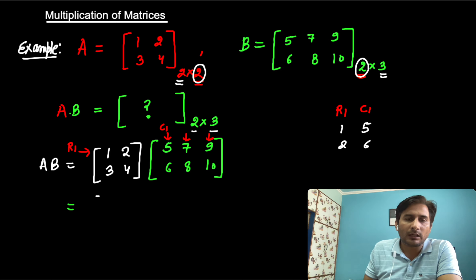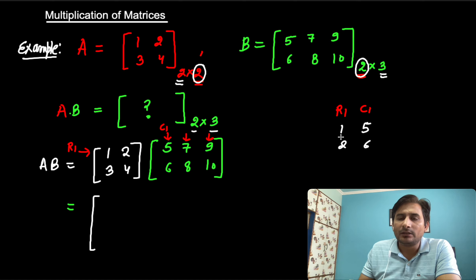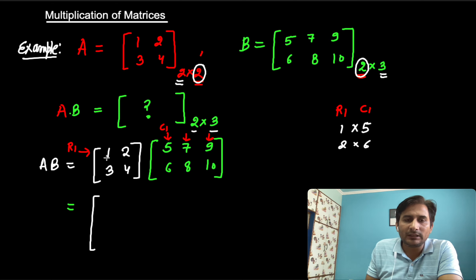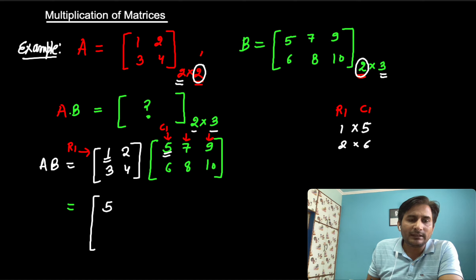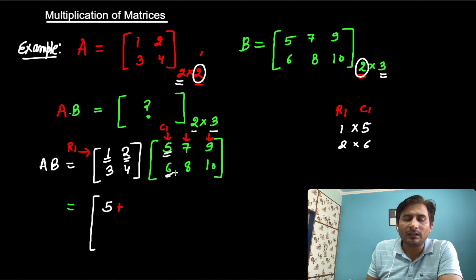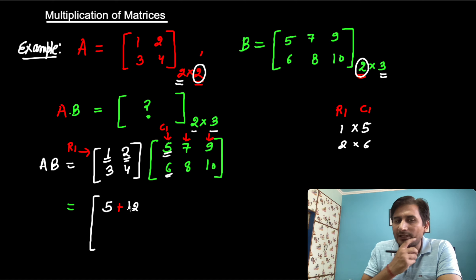So what we need to do now: row 1 multiplied with column 1. The first element multiplied with the first element and second element multiplied with the second element. So this 1 multiplied with this 5 — 1×5 = 5. Then the important thing is we put a plus sign in between. Then 2 multiplied with the second element of the column — 2×6 = 12. So 5+12 = 17, this is the first element.